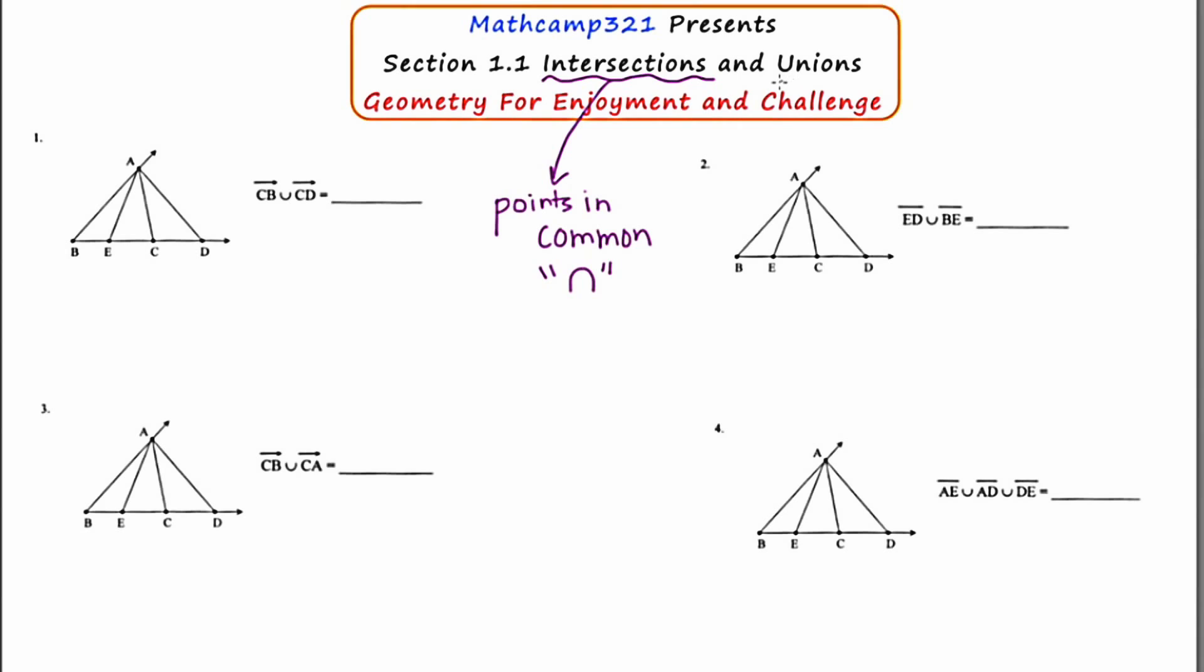Now let's contrast that with the word union. These words often go hand in hand, intersection and union. Union, the phrase that I'm going to write down is joins together. And the symbol for union is a U.